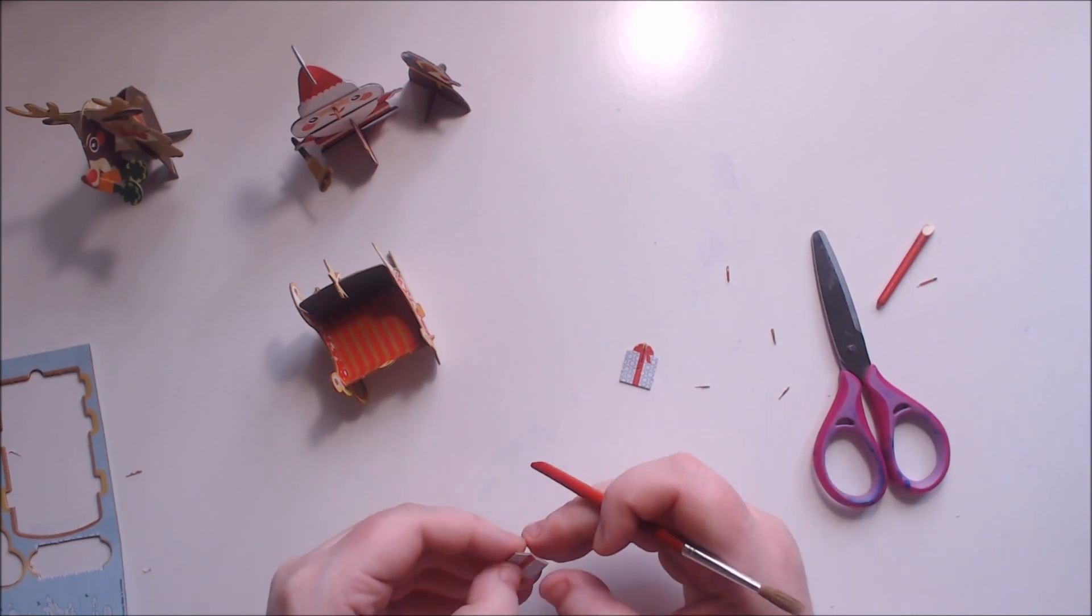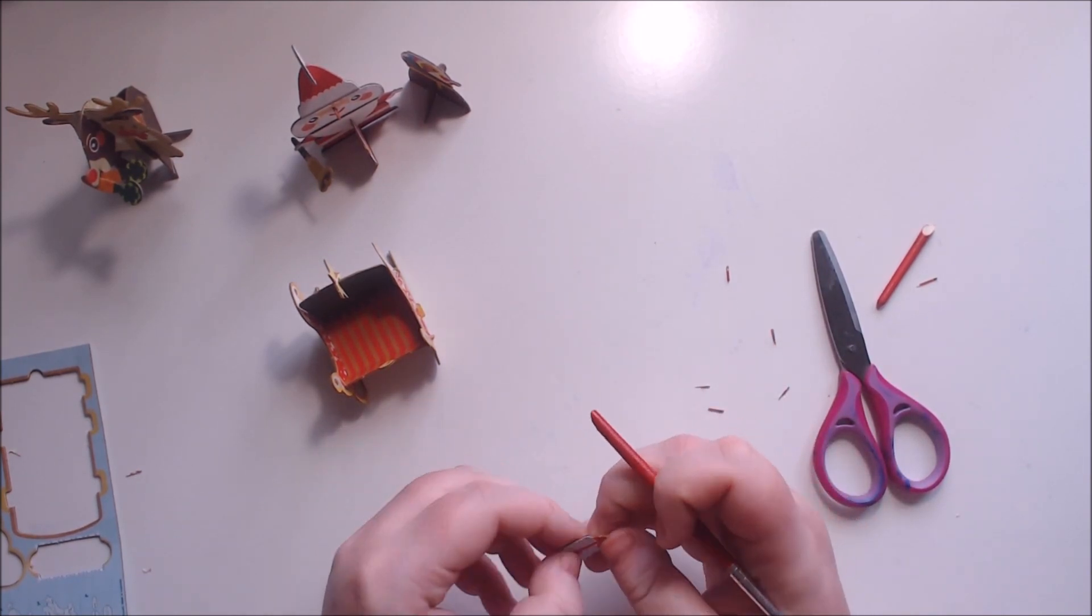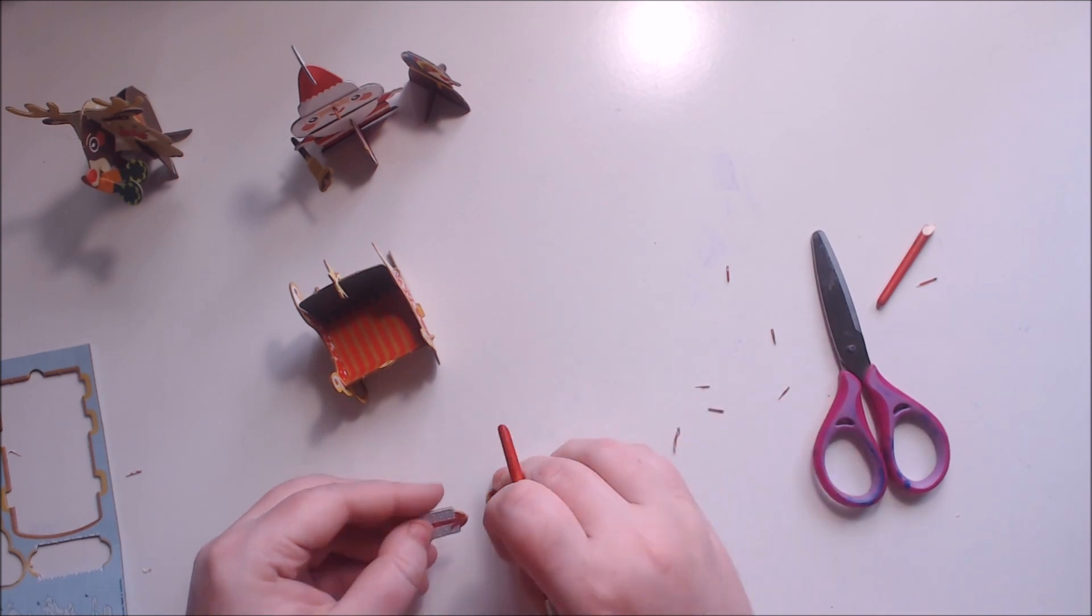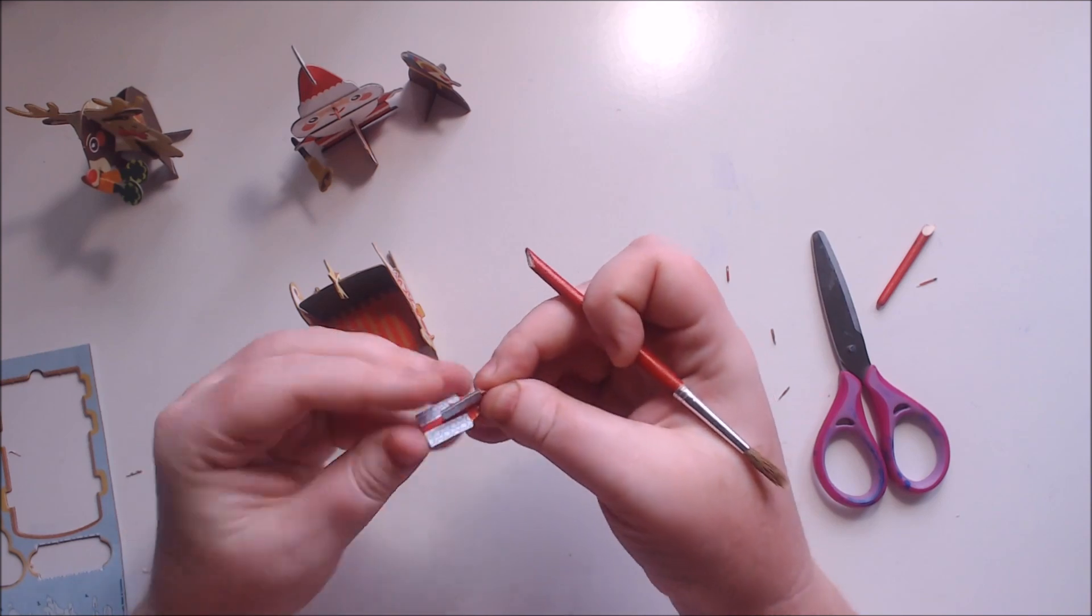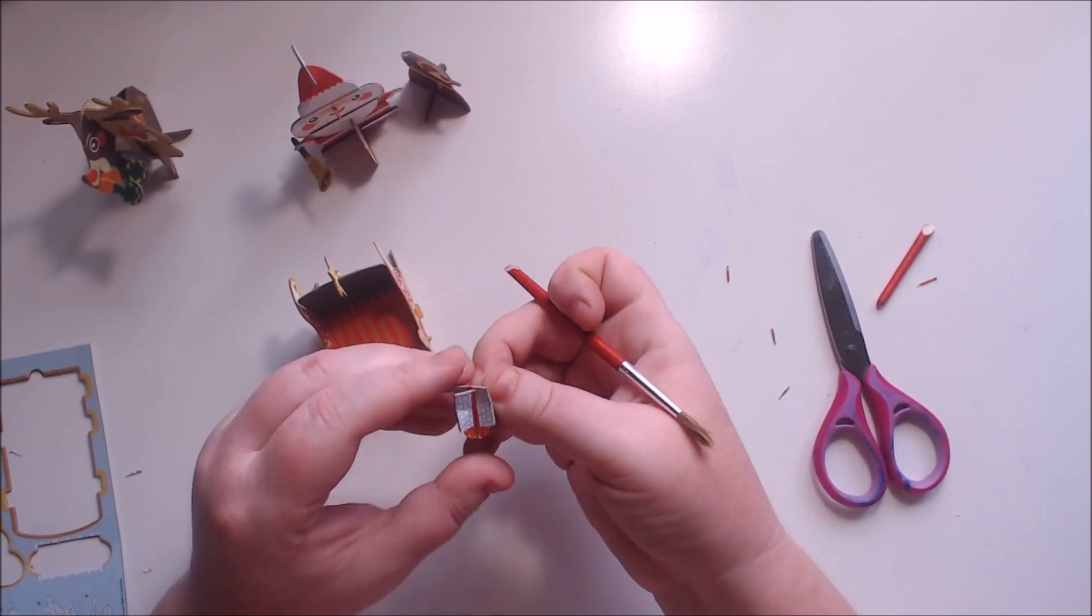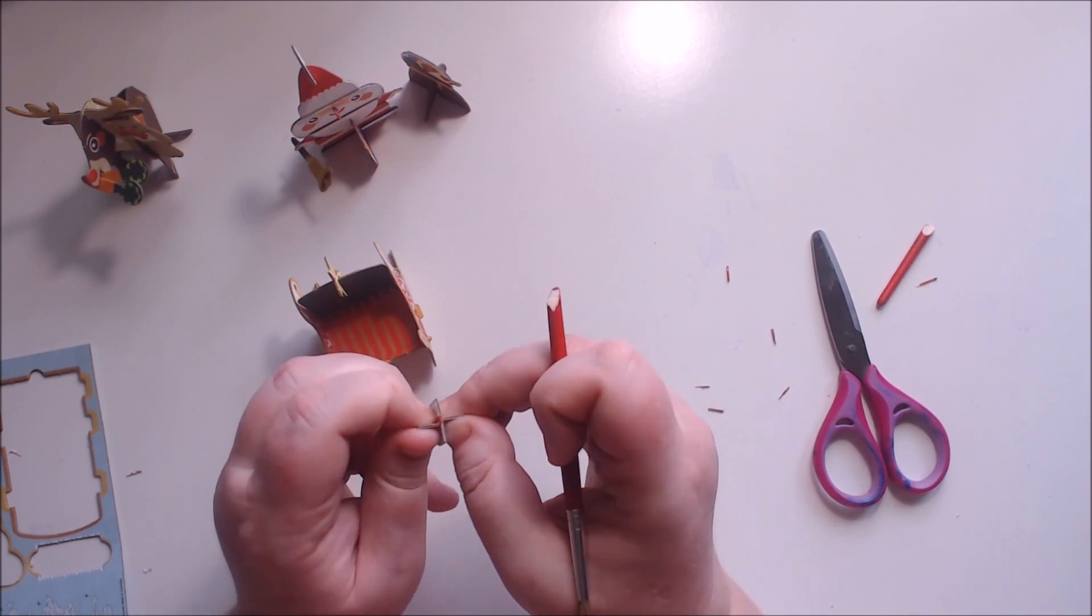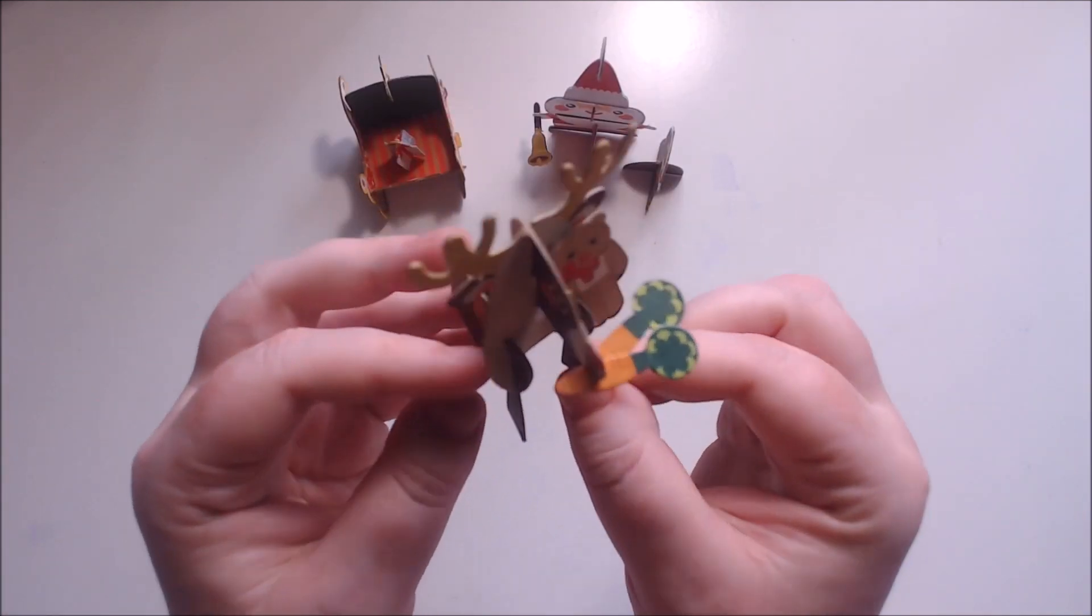And that there is complete. And then we just need to do the little present, just getting out all the tabs. This one seemed to have tabs that did not want to come out, but once the present is all together, it's just a typical one of those ones where you just slide the two pieces together and then it makes like a little sort of cross shape, and that helps the present stand up.